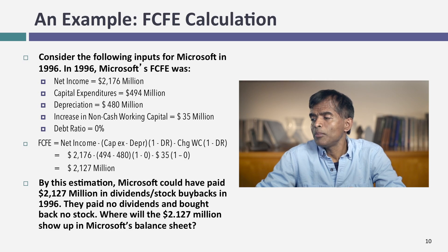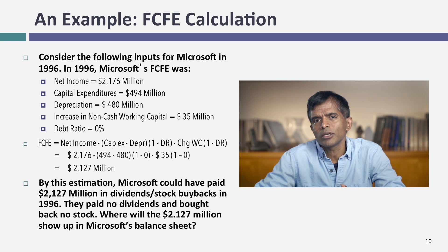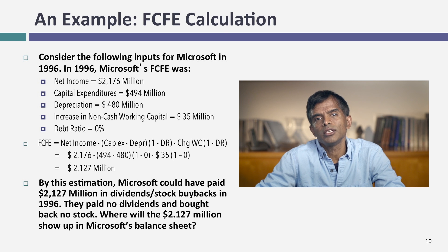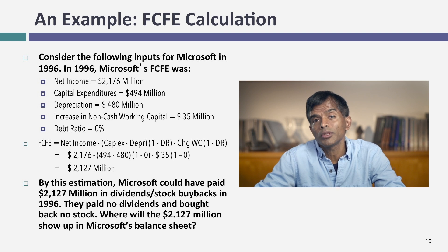Let's try this simplified approach for Microsoft in 1996. In that year, Microsoft had $2,176 million in net income and relatively little net capex and change in working capital — the reason being that its biggest capex is R&D, which was already netted out to get to net income. After subtracting net capex and change in working capital, and allowing for the fact that Microsoft did not use debt in 1996, their free cash flow to equity was $2,127 million. In 1996, Microsoft could have afforded to return $2,127 million to their stockholders. But they paid no dividend and bought back no stock.